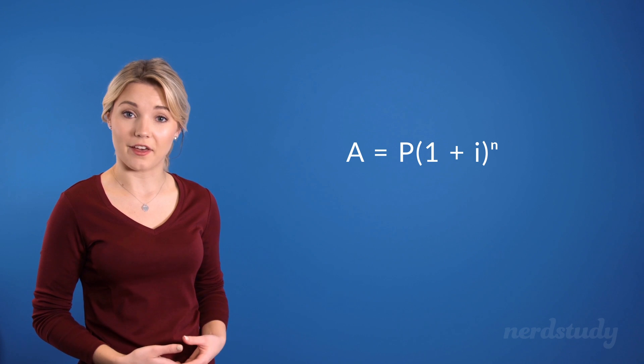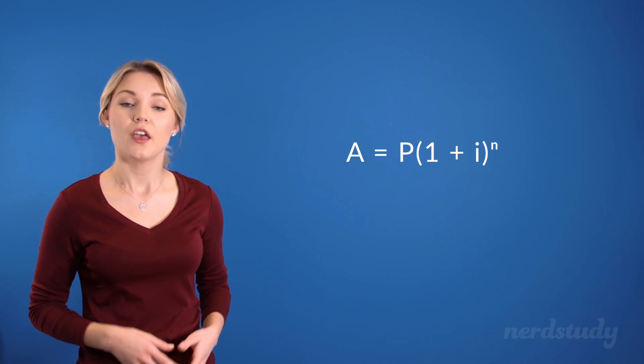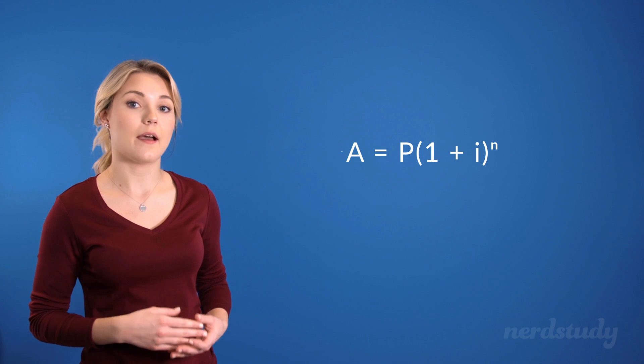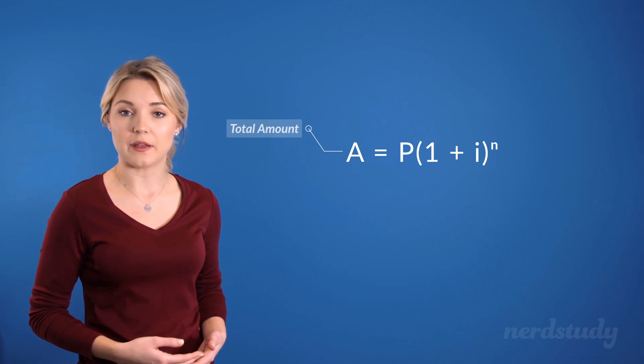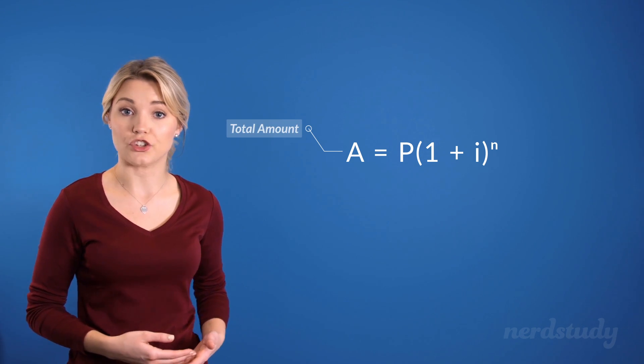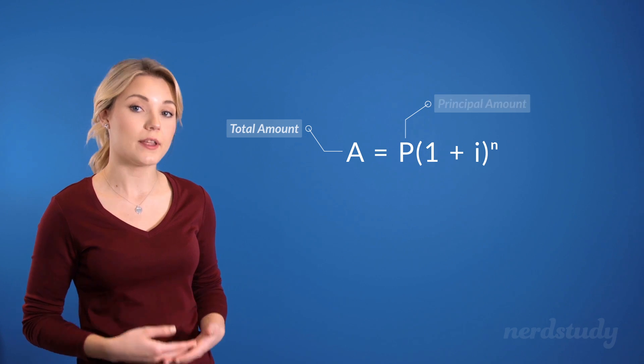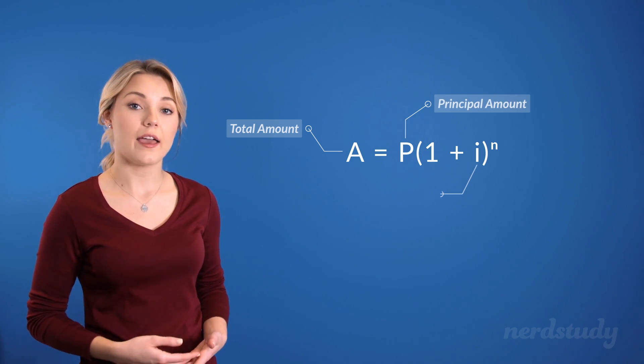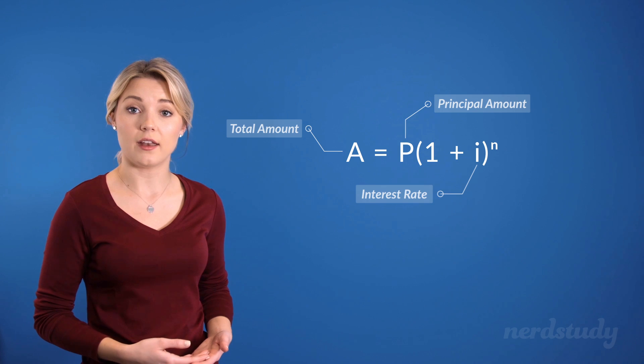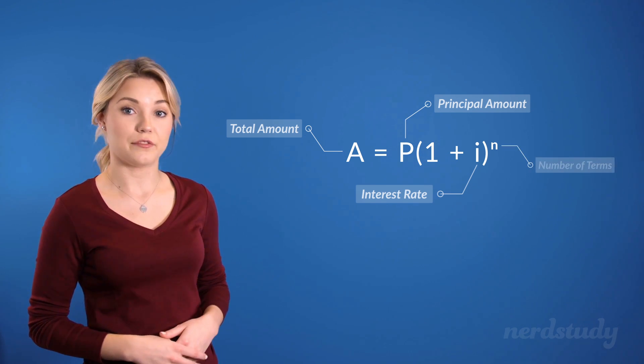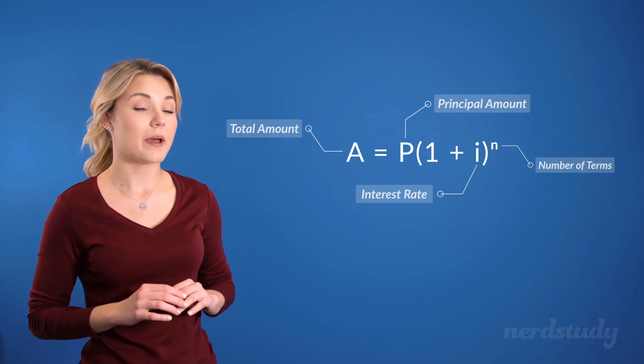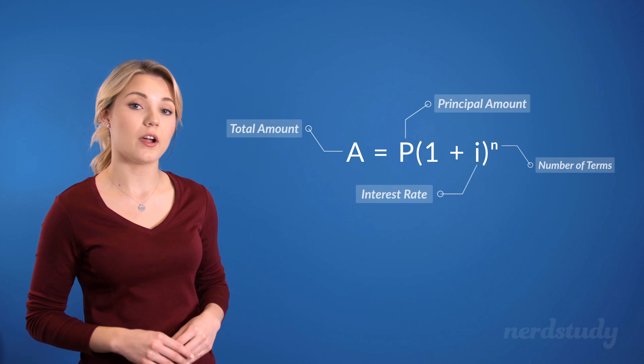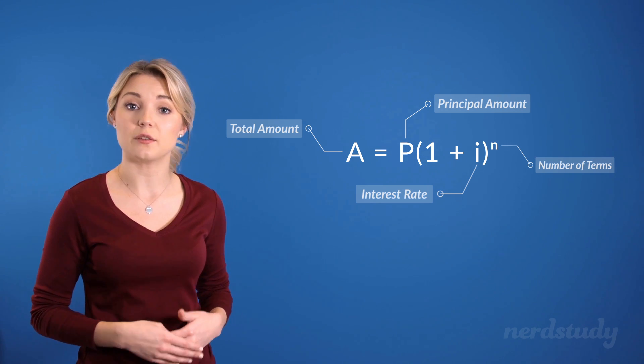All right, so now that we understand the concept of compound interest, let's take a look at the actual formula for compound interest. So here's the formula, where the A is the amount of value that an investment or loan carries with a compound interest, P is the principal amount, I is the interest rate compounded, and N is the number of terms. What we mean by number of terms is the number of times the interest rate needs to be compounded.